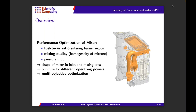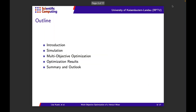Since we want to do this over different levels of operating powers, this is a multipoint optimization. And since we have different objective functions, we have a multi-objective optimization. To give a short outline: first I will talk about the simulation aspect, as we changed it a bit; then concentrate on multi-objective optimization, how we set it up in the framework; and then show some optimization results.